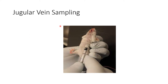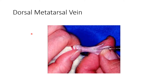In jugular vein sampling, the jugular vein is present near the neck and blood is collected with the help of a syringe. For the dorsal metatarsal vein method, blood is collected from the vein present in the metatarsal of the animal.